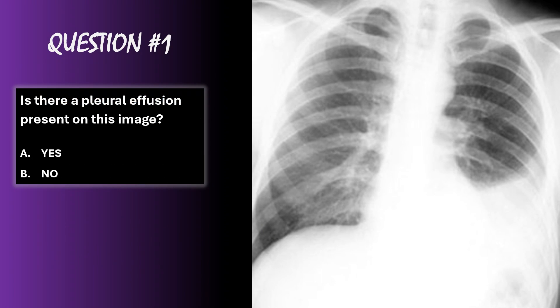Let's go through a few cases to see if any of this stuck. Is there a pleural effusion present on this image? Yes — there is a pleural effusion in the left lower lung field with blunting of the costophrenic angle and meniscus sign.